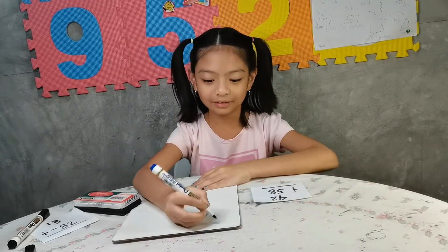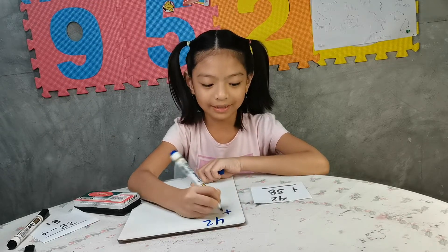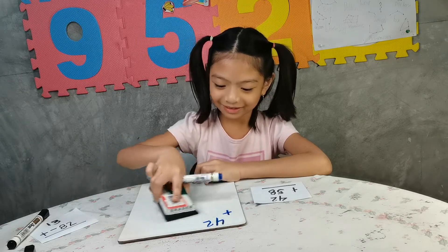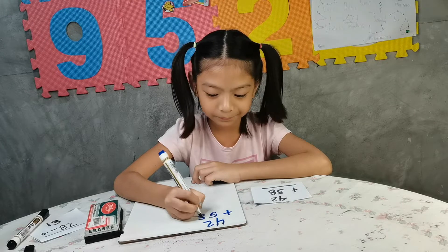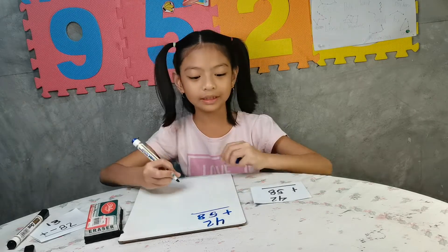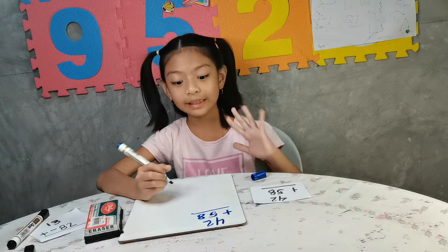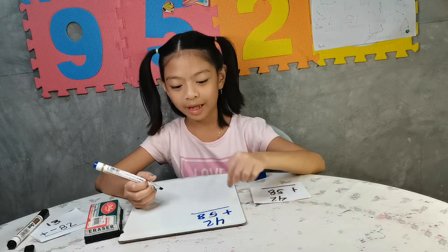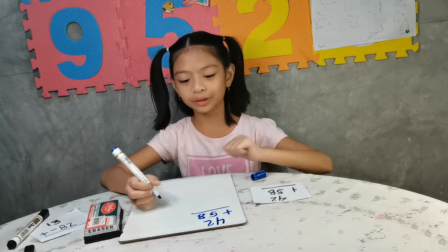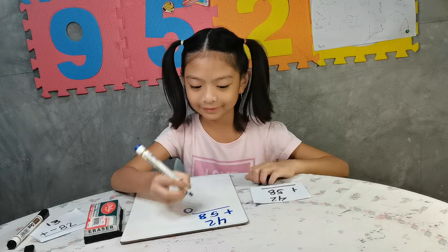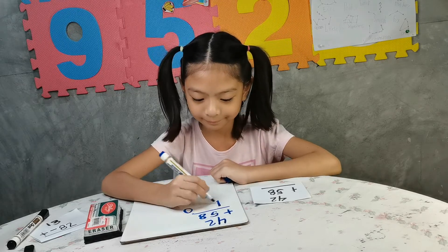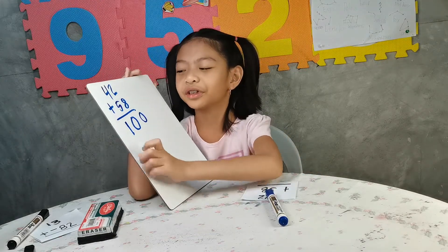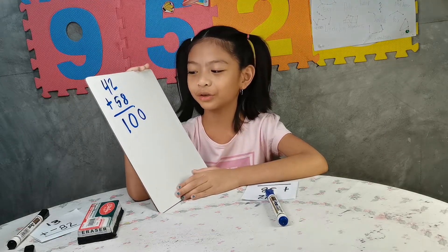Next: 42 plus 58. They both have the same sign — positive — so 42 plus 58 equals positive 100. The answer of 42 plus 58 equals 100.